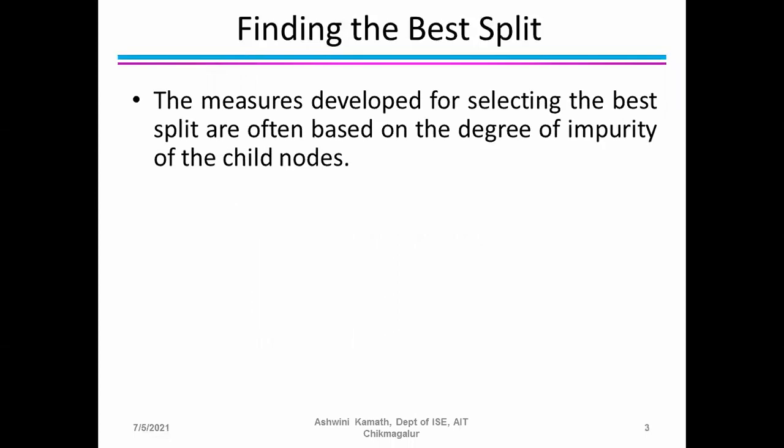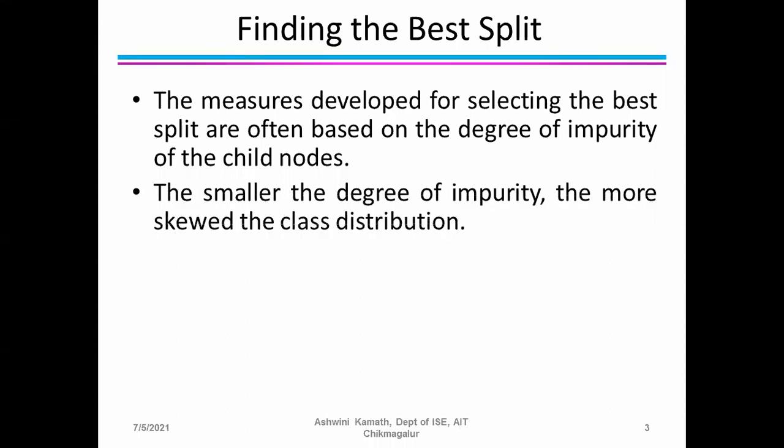When finding the best split, the measures developed for selecting the best split are often based on the degree of impurity of the child nodes — that is, how much impurity we have in the child nodes. The smaller the degree of impurity, the more skewed the classification distribution.